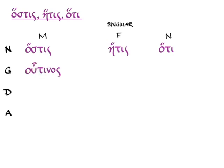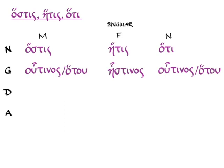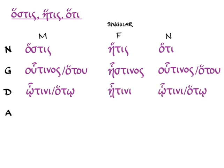We continue that logic in the other cases. The genitive is οὗτινος, although there is an alternate form ὅτου, ἧστινος, and οὗτινος or ὅτου again. The dative is ᾧτινι with the alternate ὅτῳ, ᾗτινι, and ᾧτινι or ὅτῳ again in the neuter. The accusative is ὅντινα, ἥντινα, ὅ τι.